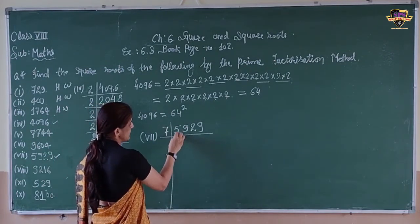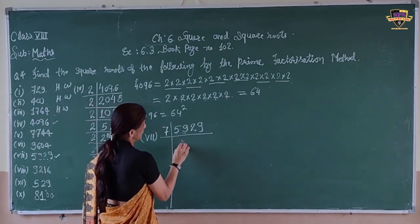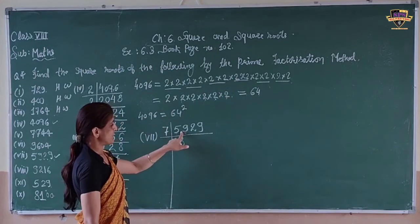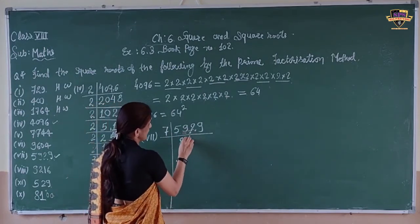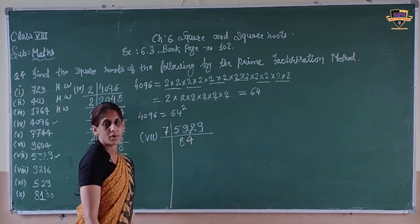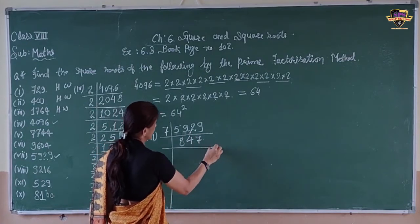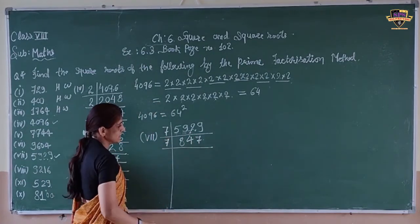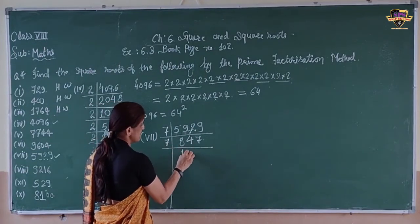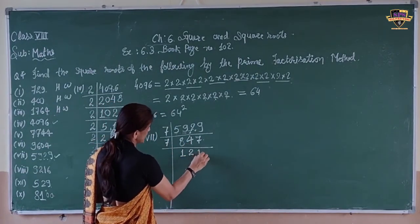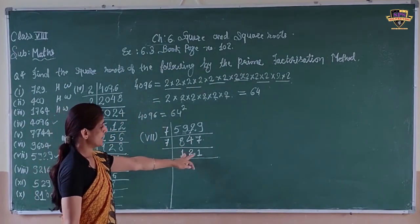Next is 7. 5929 divided by 7. 7 times 8 is 56. So we get 22. Now 7 times 3 is 21. 7 times 4 is 28, or 24. Keep dividing by 7 until we get 121.